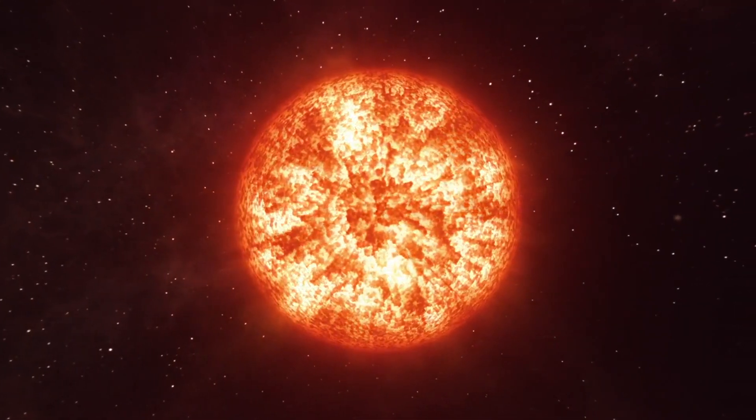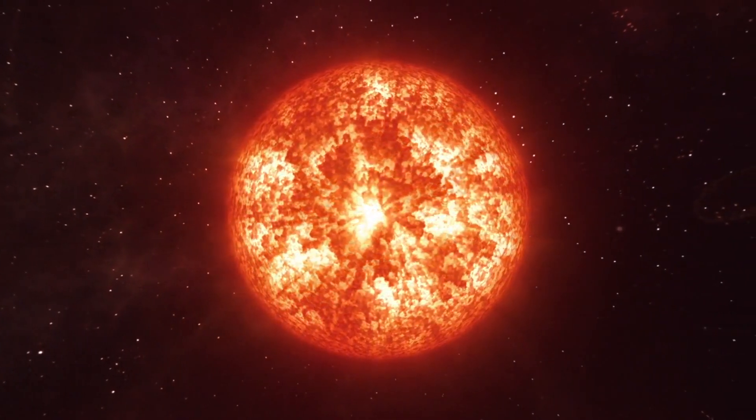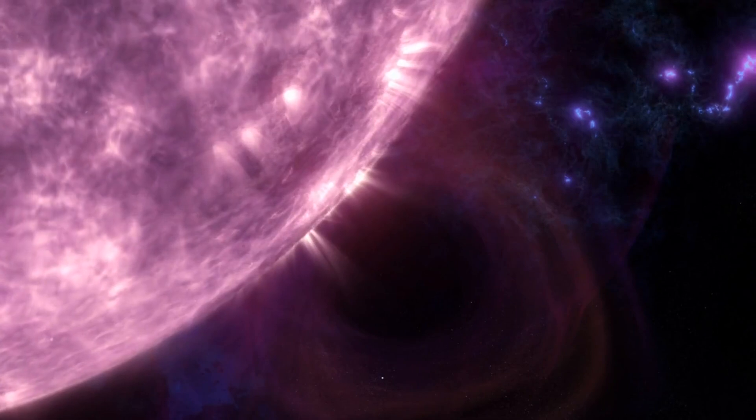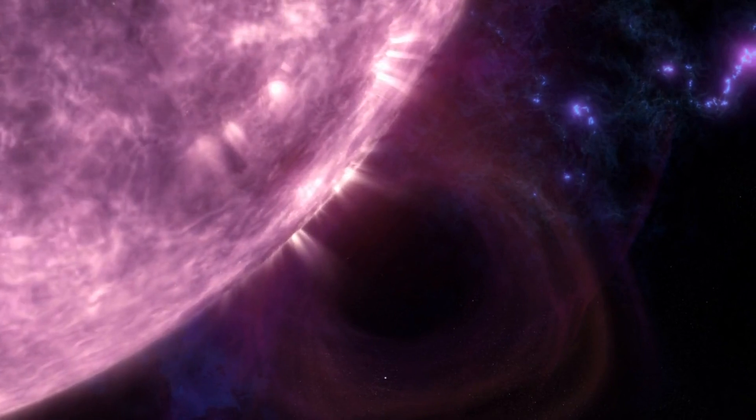It's predicted to end its life in a spectacular supernova explosion within the next 100,000 years. In late 2019, Betelgeuse began an unprecedented dimming, losing about 60% of its brightness. This phenomenon was far beyond normal variability for the star, sparking intense speculation and study.